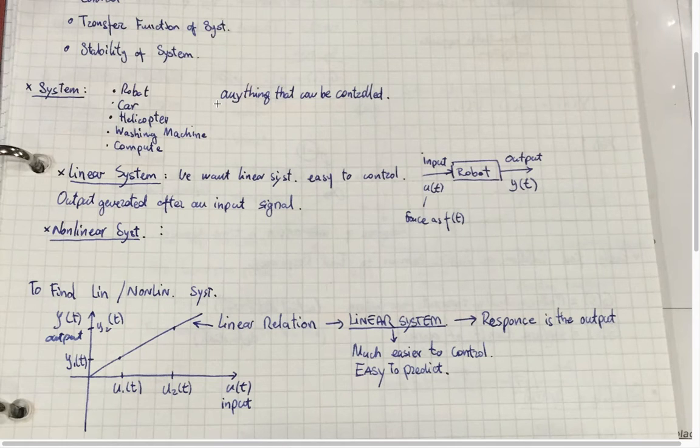A system is anything that can be controlled. We can have linear systems and non-linear systems. A system is called linear when it's easy to control. We have input, output, so we can get the desired output by knowing the required input.